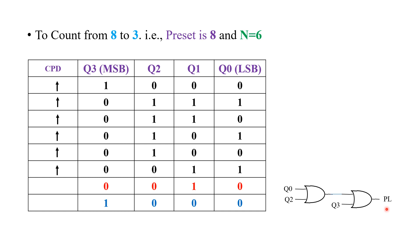Make sure that when we make these three as a combination, in any other cases the same combination must not give the value 0 at the output, because PL gets activated when the value fed to it is equal to 0. When it is 1, it will be deactivated. As we can observe, Q0 and Q2 are connected to a two-input NOR gate. Output of this will be connected to another NOR gate along with Q3, and that will be given to the PL.